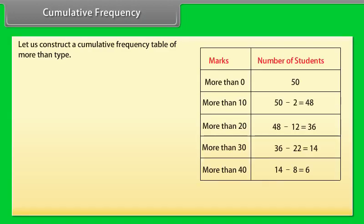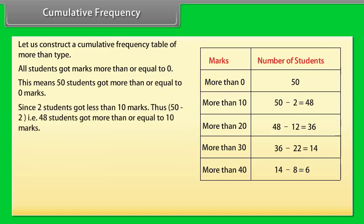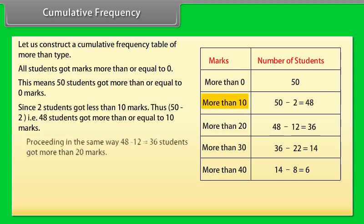Let us construct a cumulative frequency table of more than type. Here, all students got marks more than or equal to zero, which means 50 students got more than or equal to zero marks. Since two students got less than 10 marks, thus 50 minus 2, that is 48 students got more than or equal to 10 marks.